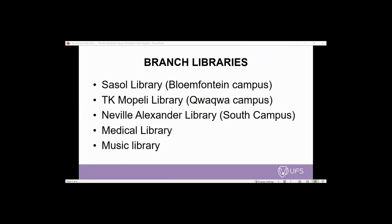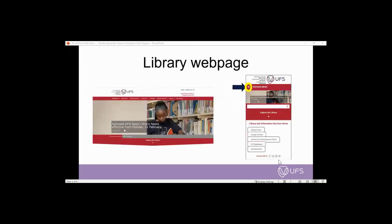The University of the Free State has various libraries. We have the Southern Library situated at the Bloomington campus, followed by the TK Mopedi Library at Gokwa campus, the Neville Alexander Library at the South Campus, the Medica Library, and also the music library, both situated at the Bloomington campus.